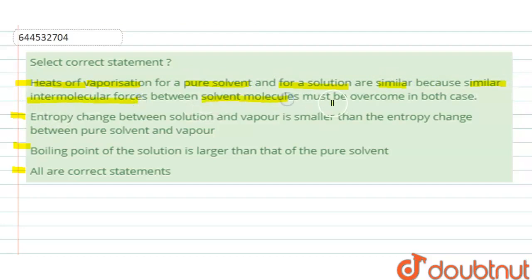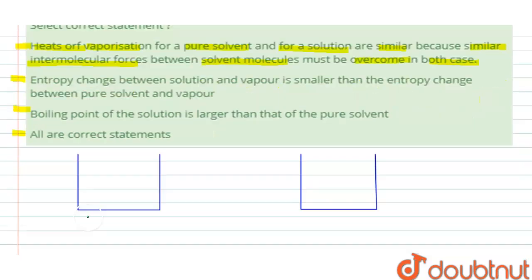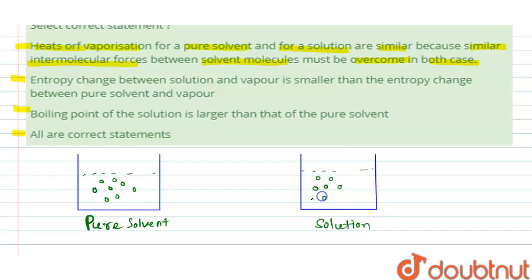In pure solvent, there are solvent molecules and they interact with each other. But in solution, solvent molecules are present along with a small amount of solute molecules. So in pure solvent there is interaction between solvent-solvent molecules, and in solution there is interaction between solvent-solvent molecules as well as solvent-solute molecules.